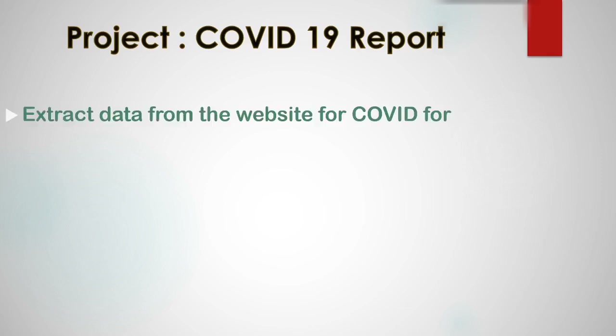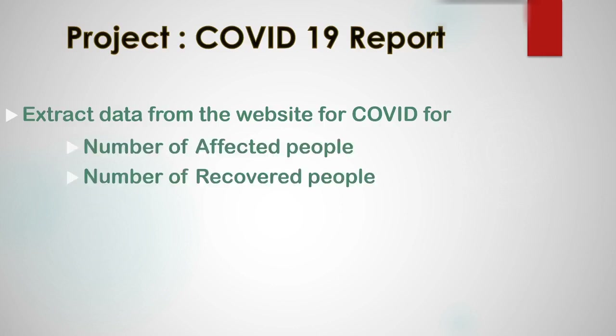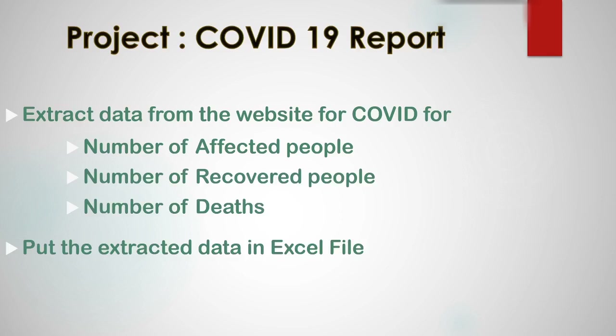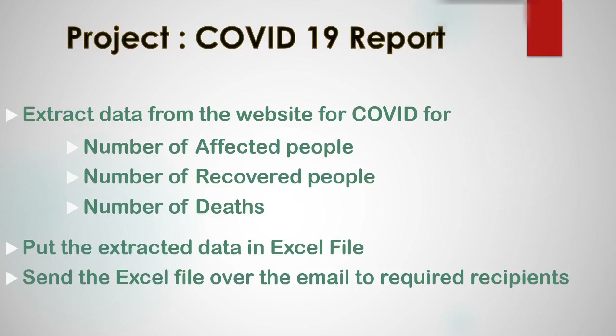Let's see what all steps we will have in our project. The first step will be to extract data from a website for COVID-19 — number of affected people, number of recovered people, and the number of deaths. Once we have extracted this data, we are going to put it into an Excel sheet and later send that Excel sheet over email to required recipients.